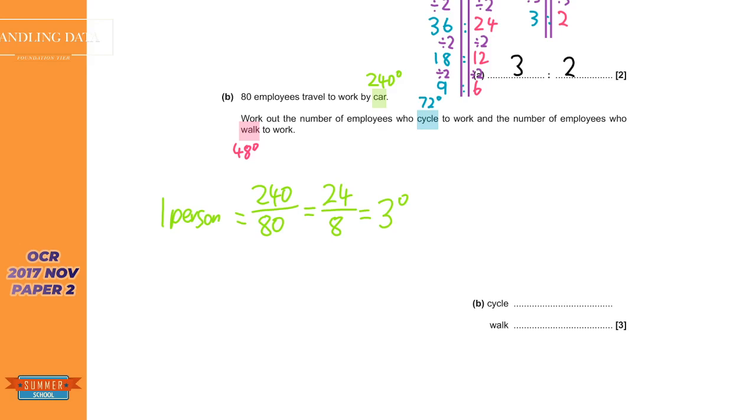So what we now need to do is we now need to divide each of the other angles by 3 because if one person is 3 degrees then 72 degrees is going to be 24. And if you don't know that you can do a quick bus stop. So 3 goes on the outside, 72. 3s into 7 go twice, carry the 1. 3s into 12 go 4. So that's 24. And that is cycle.